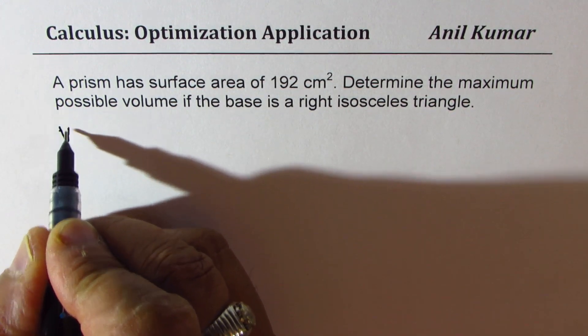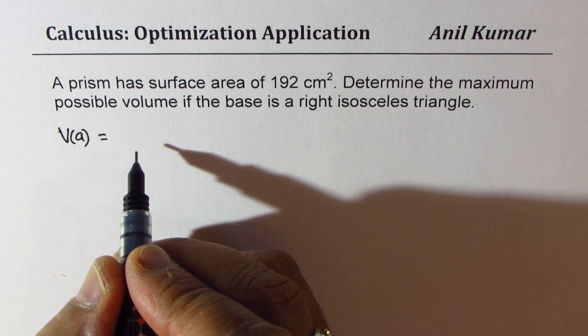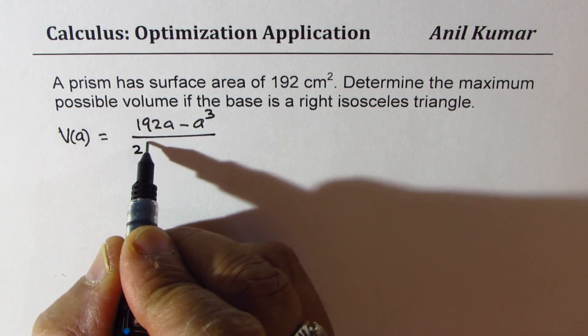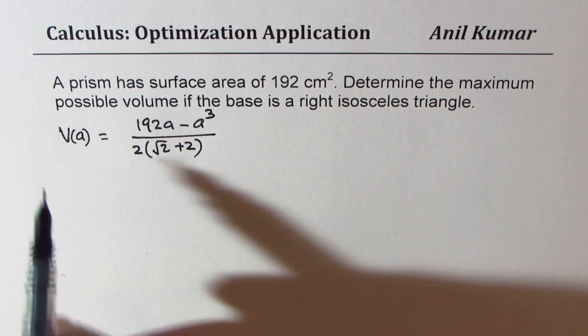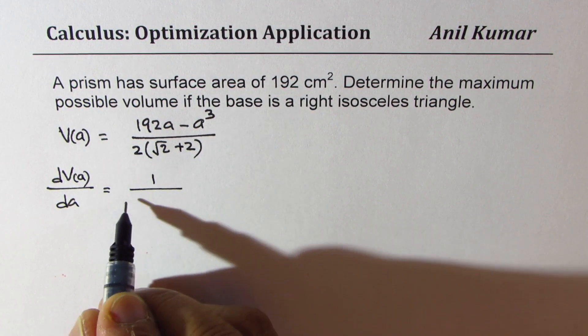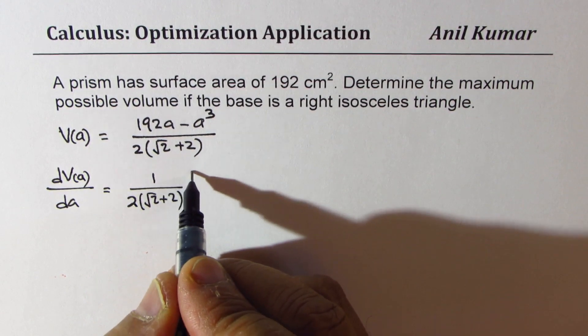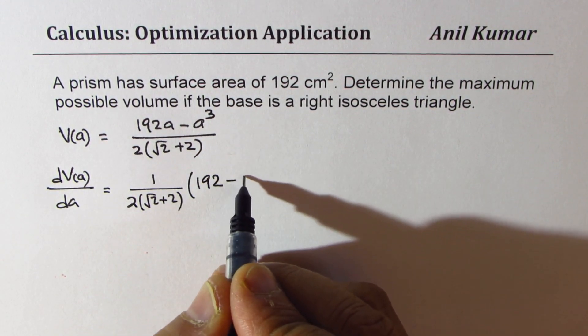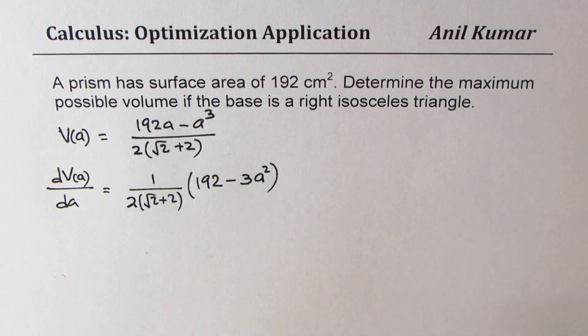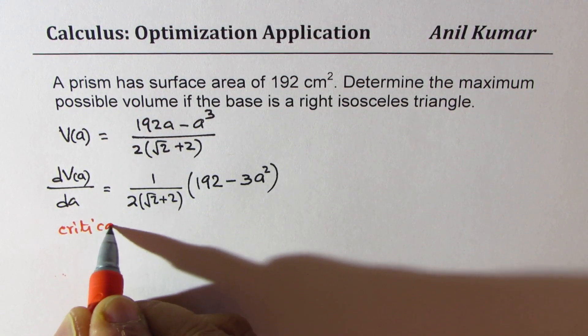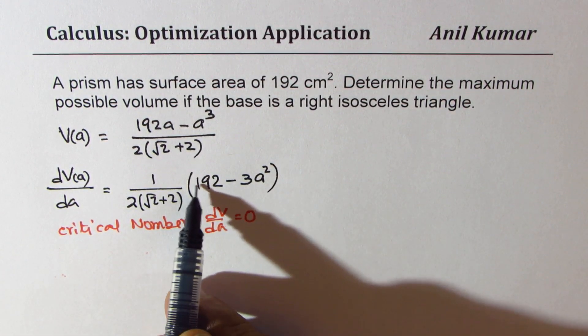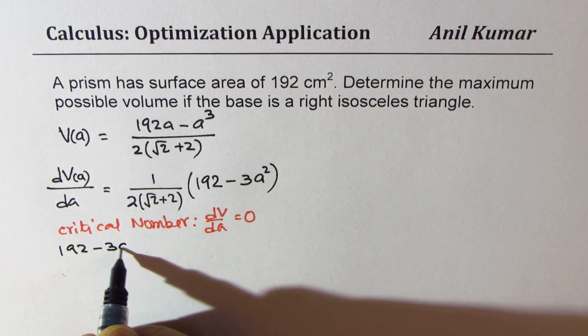So we have the expression for volume as a function of side of the isosceles triangle as 192a minus a cube divided by a constant term which is 2 times square root 2 plus 2. We can differentiate volume with a. This is a constant. Let me write it as such, 2 times square root 2 plus 2. And here we can write the derivative as 192 minus 3a square. So that becomes the derivative. For critical number, dv/da should be equal to 0.